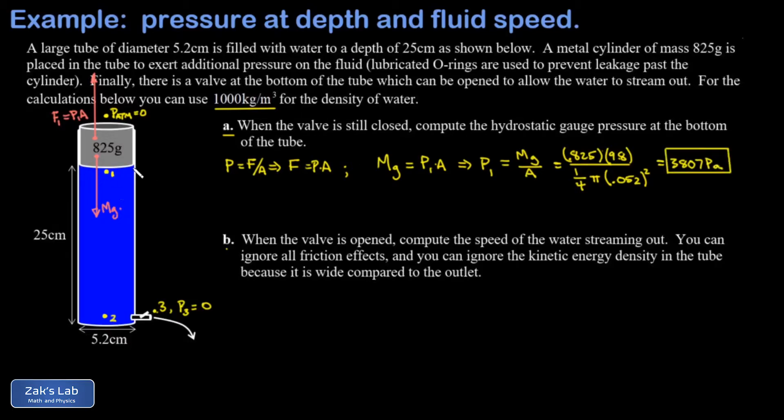That's the pressure at point 1 at the top of the water column. Now we have to find the pressure at point 2, given by P1 plus ρgd where d is the depth of the fluid.